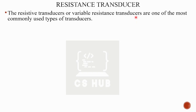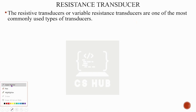You can learn resistance in ohms — 2 ohms resistance, 3 ohms resistance. When we learn the relation, we learn V is equal to IR. So we learn resistance.